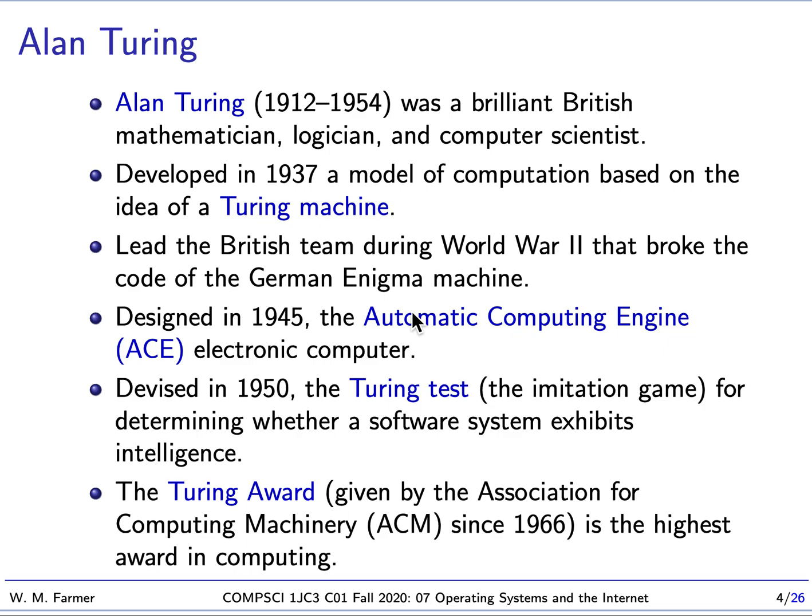During World War II, Turing spent his time working on breaking the code of the German Enigma machine. This was a machine that the Germans used widely to encode messages. This was hugely important work for helping the Allies — the British, the Americans, and the Soviets — win World War II. The interesting thing is that the world didn't really know about this work by Alan Turing until the 1990s, when it was declassified from top-secret status. It was quite a surprise to find out that this famous logician did something very significant during World War II.